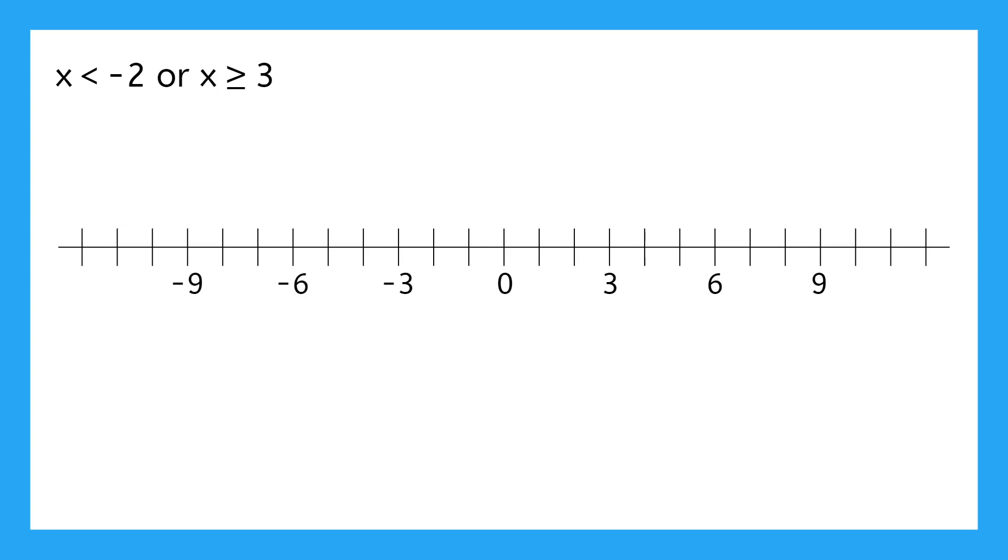The other type of compound inequality is an OR, such as x < -2 OR x ≥ 3. This is the same as the previous example, just with OR instead of AND. You'll see that one little change makes a huge difference. So first, let's mark our number line with all the numbers less than negative 2 and all the numbers greater than or equal to 3.